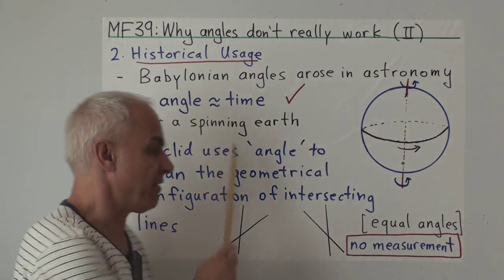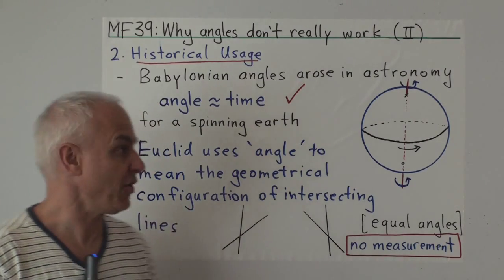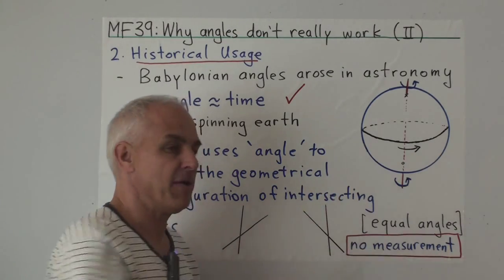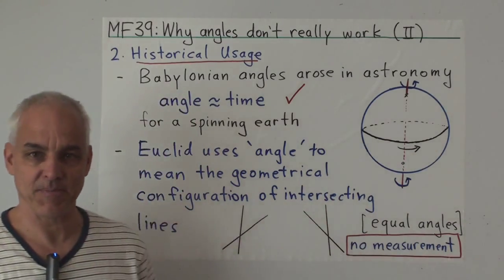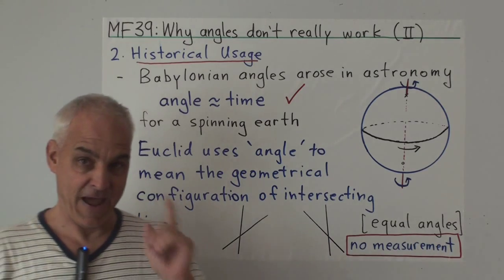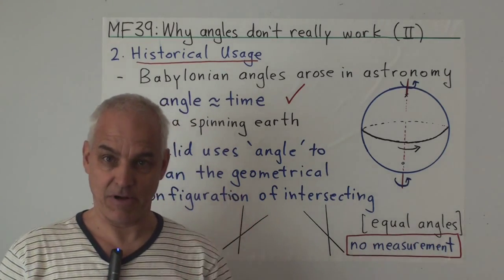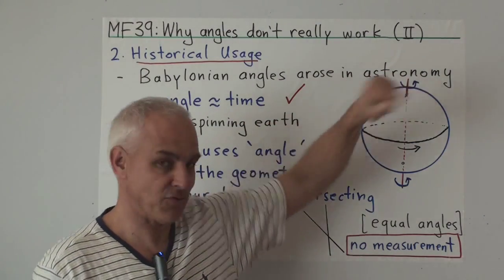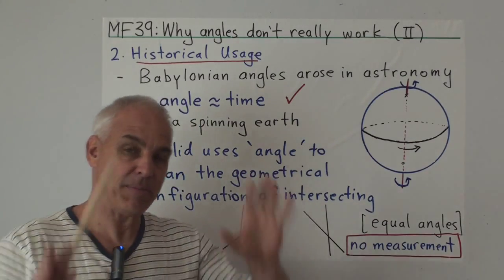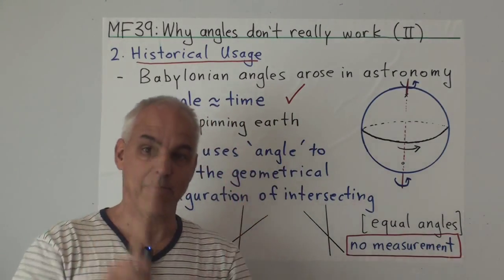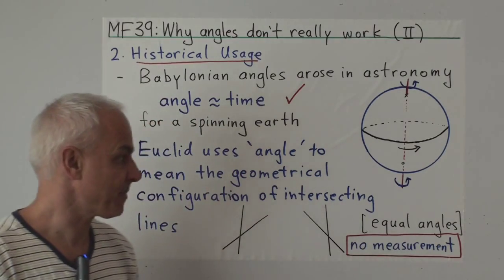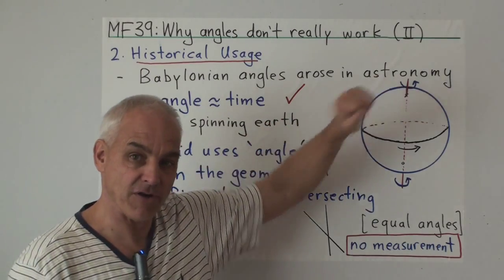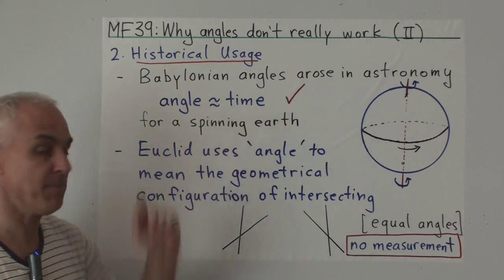It's very interesting and informative to go back to a historical understanding of how angles arose. Angles arose in Babylonian times when they were studying astronomy. The critical fact about the world in which we live from an astronomical point of view is that the earth itself is spinning around its axis once every 24 hours. That means our view of the celestial sky is rotating above us at a uniform rate. So there's naturally an association between the angular motion of our spinning earth and time ticking by.